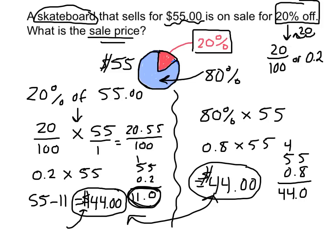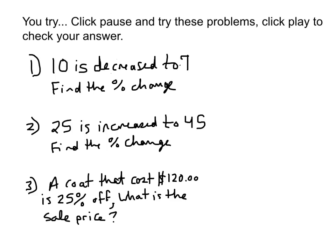So a good strategy to find the sale price of an item is to figure out how much of the item you're paying for and multiply that price of the item by that percentage. Maybe you can try that in one of the sample problems that are coming up next. So you try these three problems. Click pause and try them out in your notebook. When you're ready to see the answers, click play to check your answers. Good luck.